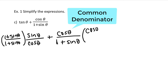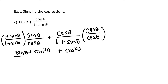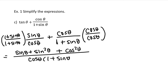So I'll write 1 plus sine theta divided by 1 plus sine theta, and for the right-hand term I'll multiply by a factor of 1 expressed as cosine theta over cosine theta. Now let's distribute. On the left-hand side I will have sine theta plus sine squared theta. On the right-hand side I will have cosine squared theta, and all of this is over the common denominator of cosine theta times 1 plus sine theta.